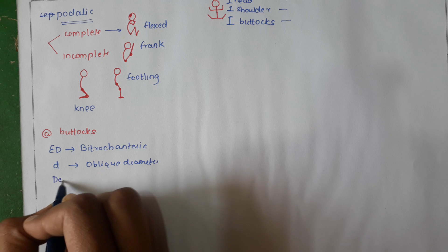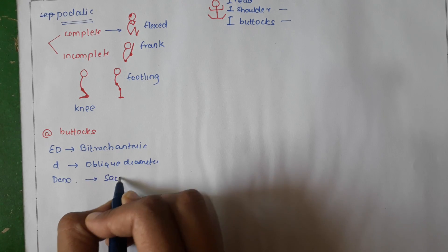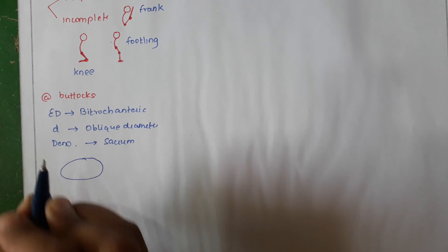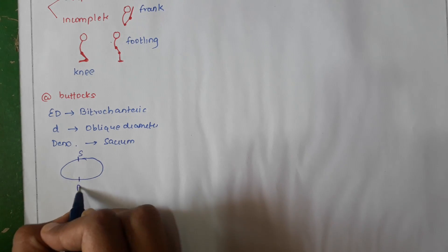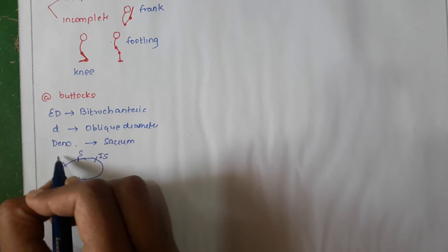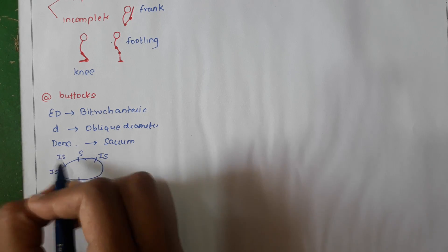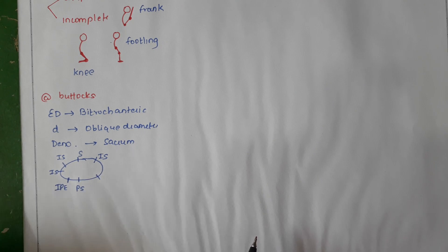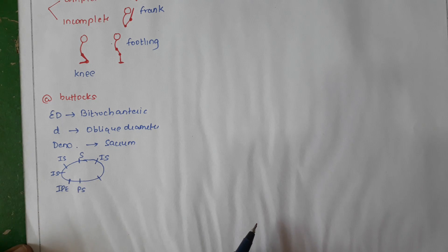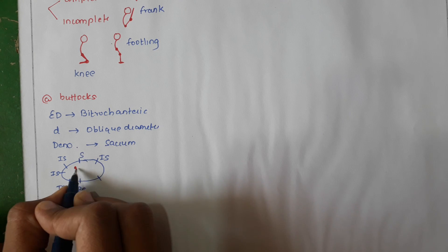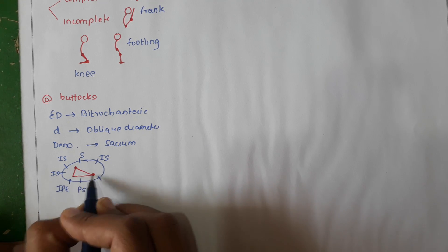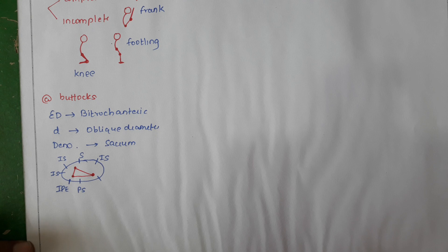The denominator is the sacrum. Consider this as the pelvis: sacrum, pubic symphysis, iliosacral joint, ischial spine, and iliopubic eminence. Because we are talking about the right sacro-anterior position, the bitrochanteric diameter will occupy this oblique diameter and the sacrum will be in relation with your iliopubic eminence.